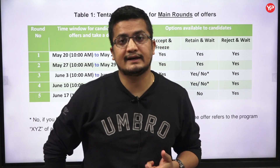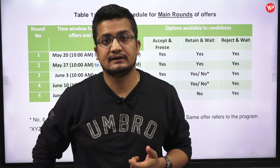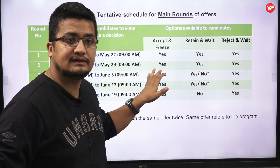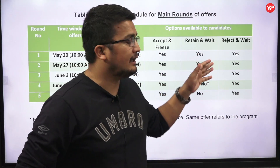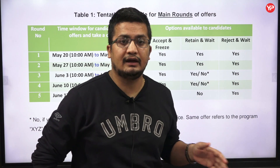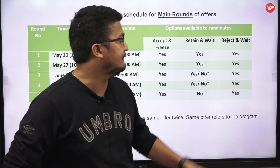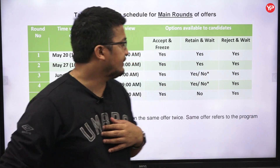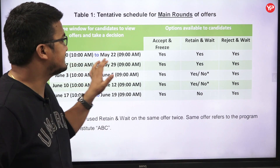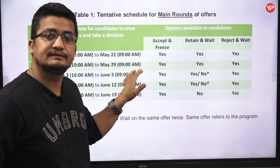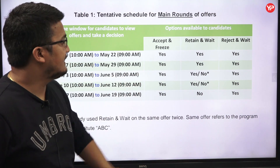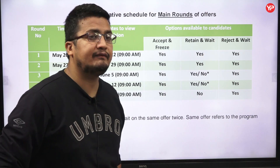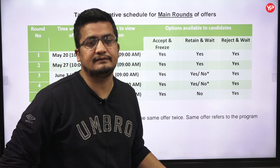You have a few options to exercise: either you can go with Accept and Freeze, either you can go with Retain and Wait, or either you can go with Reject and Wait. For the first round and second round, yes you can do Accept and Freeze, yes you can do Retain and Wait, yes you can do Reject and Wait for any.